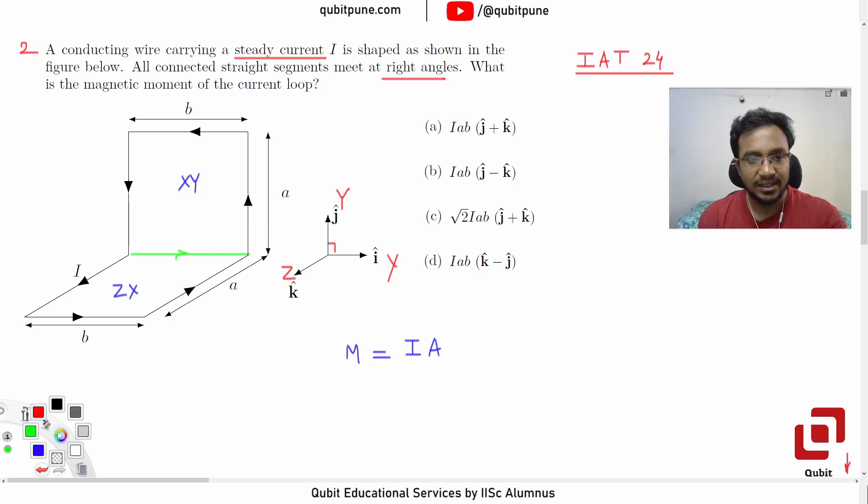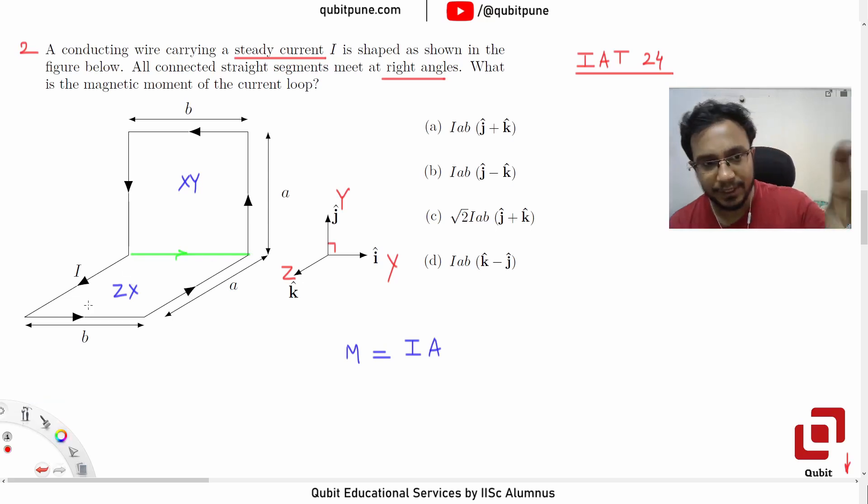And simultaneously we also complete the loop in the Z-X plane. Of course, we cannot complete it with the same wire because the directions of the current are different. So it's this, by imagining these two wires which carry currents in the opposite directions, we are saying that our conducting wire is now made up of two closed loops.